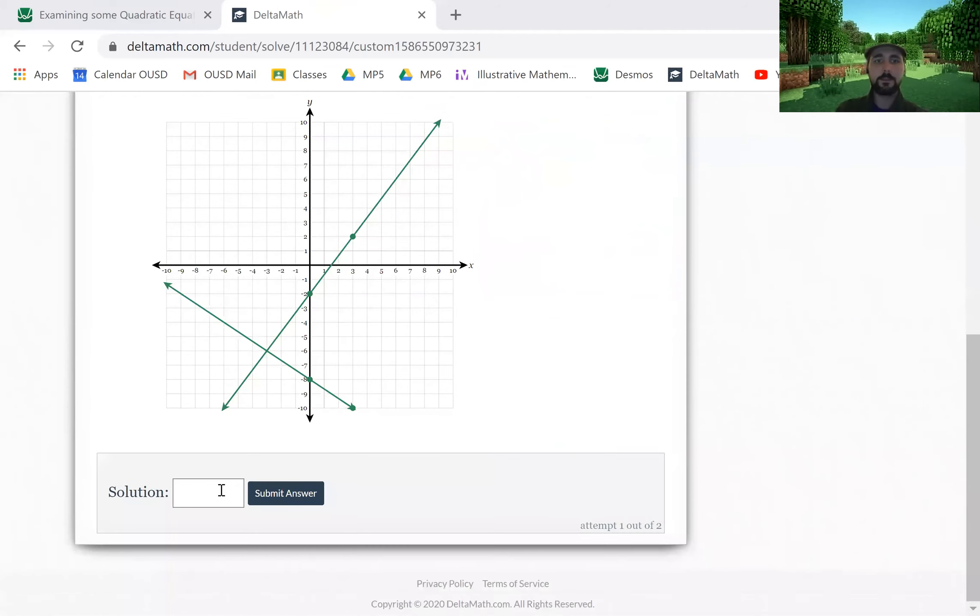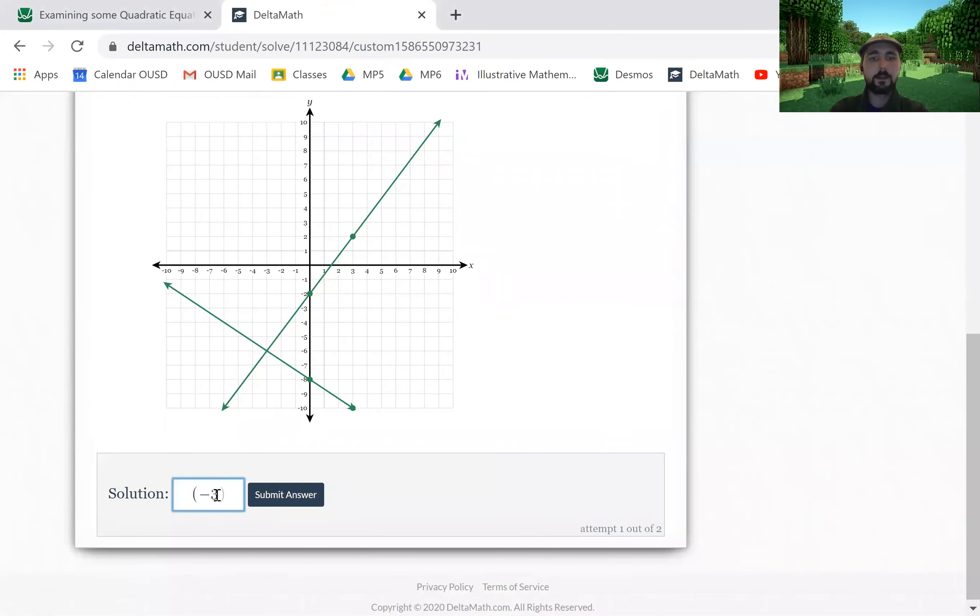So clear all drawings, and I'm going to scroll down. And like I said, the solution is that point of intersection: negative 3 comma negative 6.